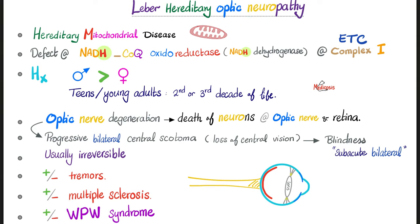Leber hereditary optic neuropathy is a hereditary mitochondrial disease. The problem is in the electron transport chain, specifically complex 1, which consists of NADH coenzyme Q oxidoreductase — also known as a dehydrogenase, an enzyme involved in oxidation-reduction reactions. If this hits the mitochondrial electron transport chain, you cannot make energy, and the most active organs suffer the most, such as the neurons of the optic nerve, the eyes, and the retina. Don't forget the nervous system and the heart. This disease is more common in males than females, and no one knows why.